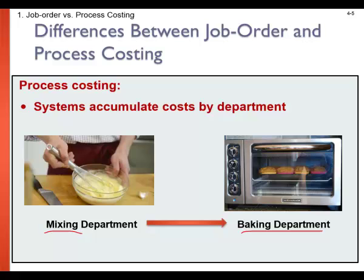Regardless of the number of departments, they have two essential features. First, the activity in the processing department is performed uniformly on all the units passing through it. Second, the output of the processing department is homogenous — all of the units produced are identical. Products flow in sequence from one department to another, so before we bake, we must start mixing, and then we move the mixed amount into the baking department.